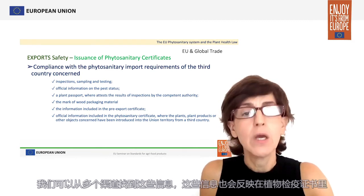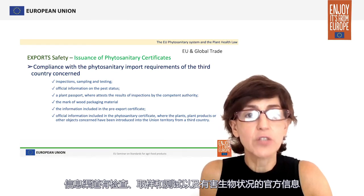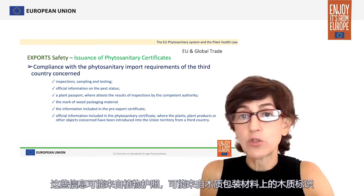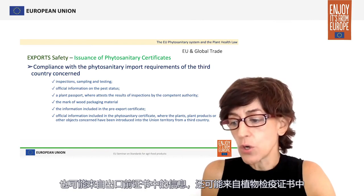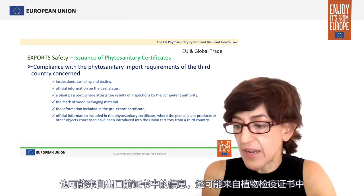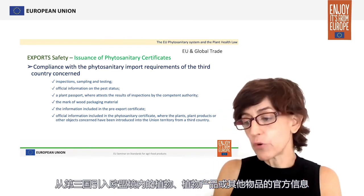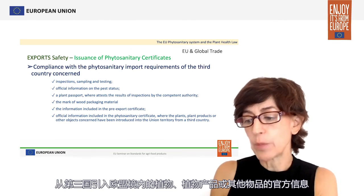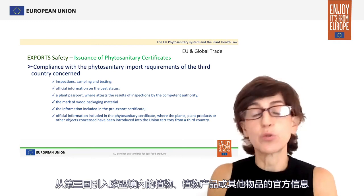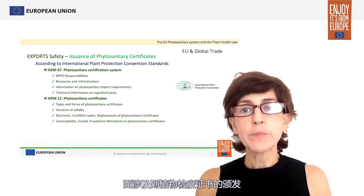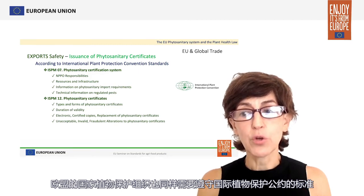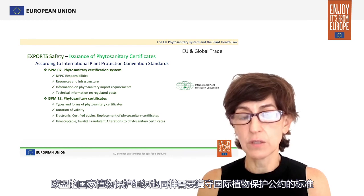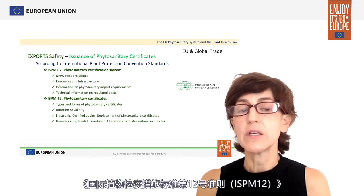There are several sources where this information can be found and reflected on the phytosanitary certificate. Examples include inspections, sampling and testing, and official information on pest status. The information may also come from a plant passport, from boot markings of wood packaging material, from pre-export certificates, or from the official information included in a phytosanitary certificate where plants, plant products or other objects have been introduced into the Union territory from a third country. When it comes to issuing phytosanitary certificates, the NPPOs of the European Union comply with International Plant Protection Convention standards, in this case ISPM 12 on phytosanitary certificates.